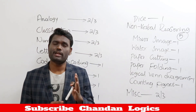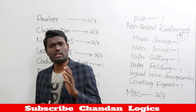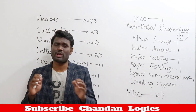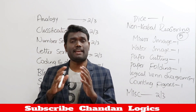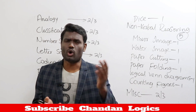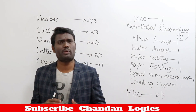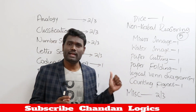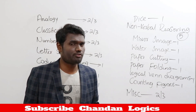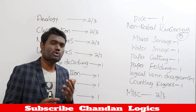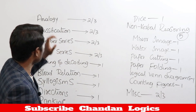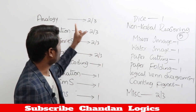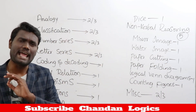Now let's look at the reasoning part. In reasoning you'll also get 25 questions, and you can score 50 out of 50. SSC reasoning is really simple because the questions are frequently repeated. Let me show you from which topics they ask questions frequently. The first topic is analogy — from analogy you'll get two to three questions in every SSC pattern of examination.